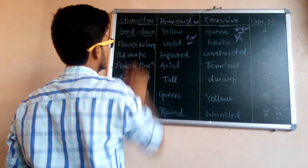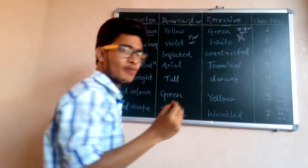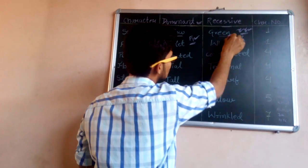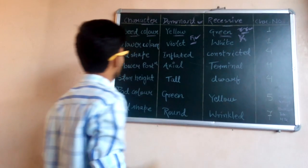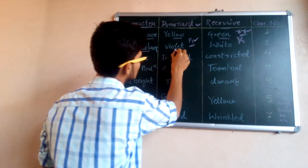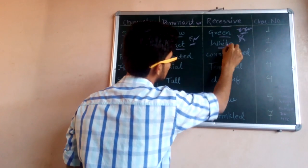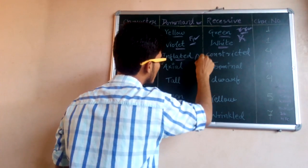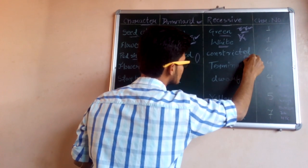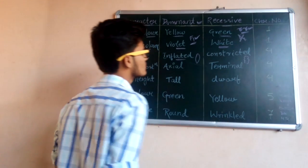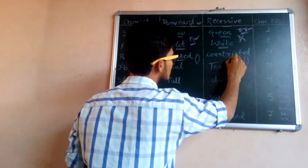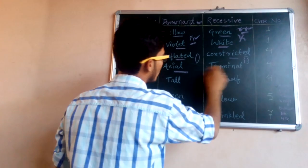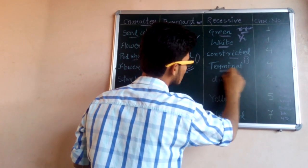The first character is seed color. For Pisum sativum, the dominant trait is yellow and the recessive is green. For flower color, the dominant is violet and the recessive is white. For pod shape, inflated is the dominant one and constricted is the recessive one. For flower position, axial — present on the axis — is dominant, and terminal — present on the terminal position of the plant stem — is recessive.